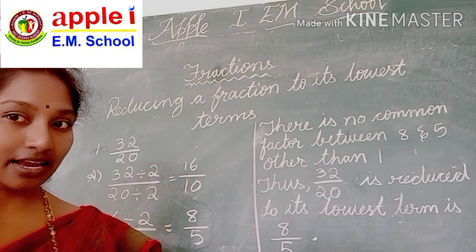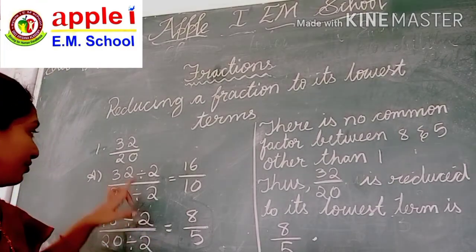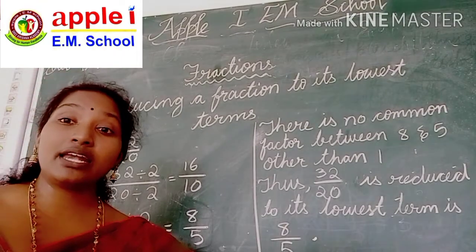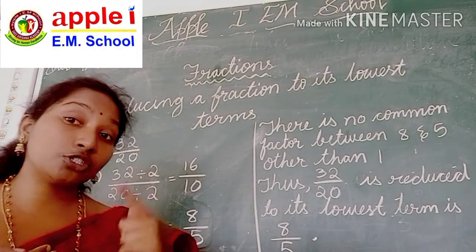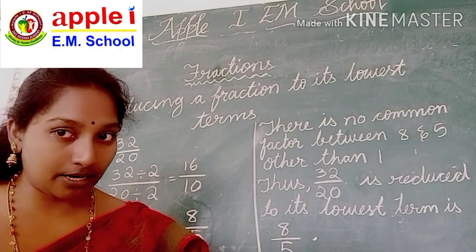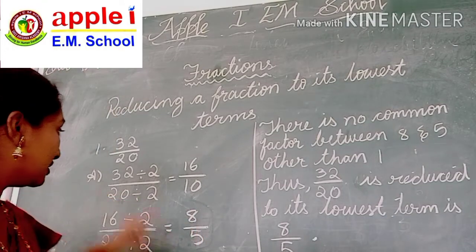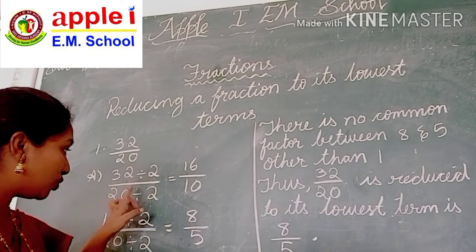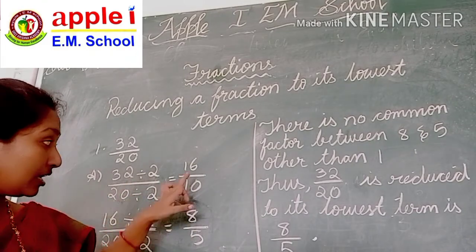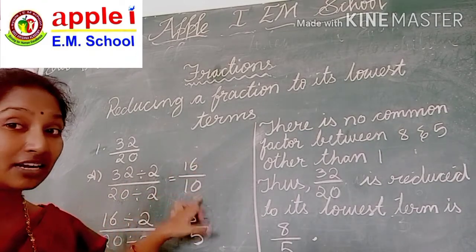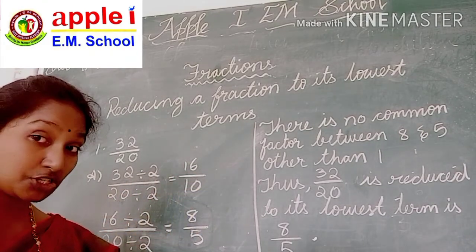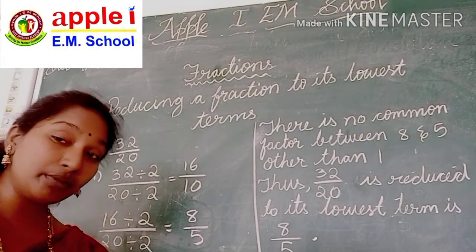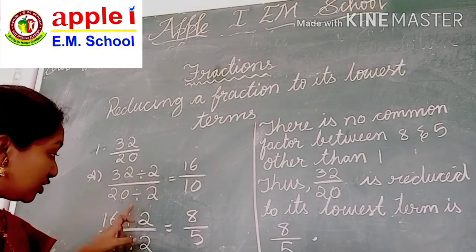Once again I am explaining. First you have to check whether both the numerator and denominator come in the same table. Here 32 and 20 will come in the 2 times table, so divide by 2. After dividing, you get 16 by 10. Again check — 16 and 10 both come in the 2 times table, so again divide by 2.